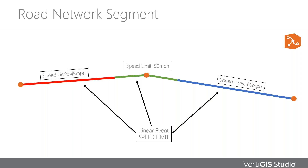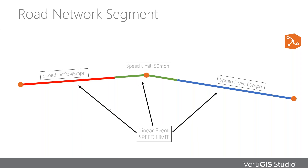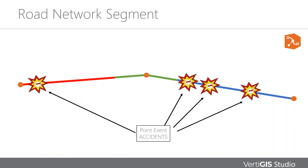One of the really good things about linear reference systems is these additional layers of information — called linear events — don't need to match the segments exactly. So we can see now where our road changes speed limit. Is there anything in that speed limit and the additional data we have that might indicate speed limits are causing accidents? We can see a point events layer for accidents, and there's a correlation between the highest speed limit equaling more accidents. The majority of them are in the 60 miles an hour zone — we might want to put a speed camera there or reduce the speed limit.